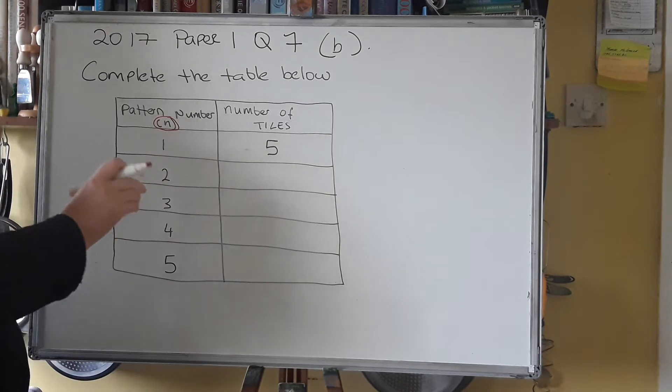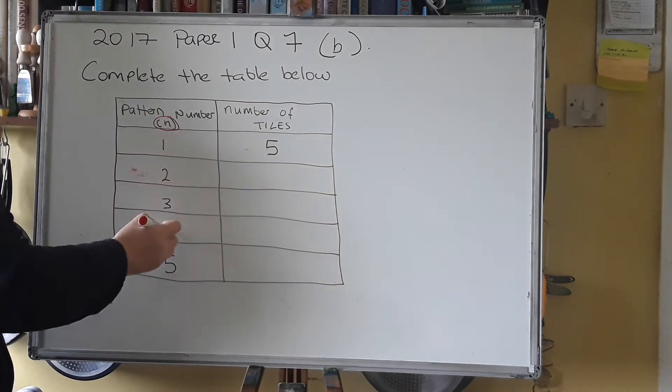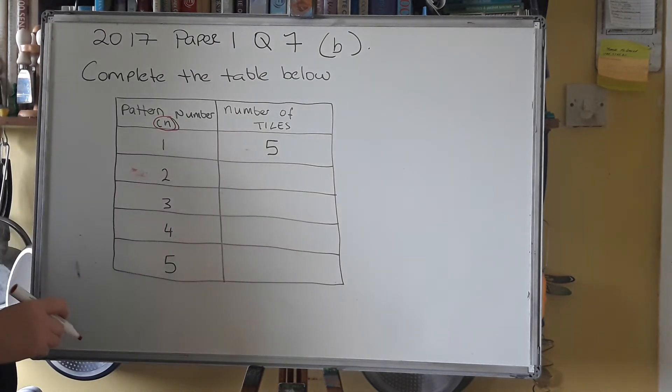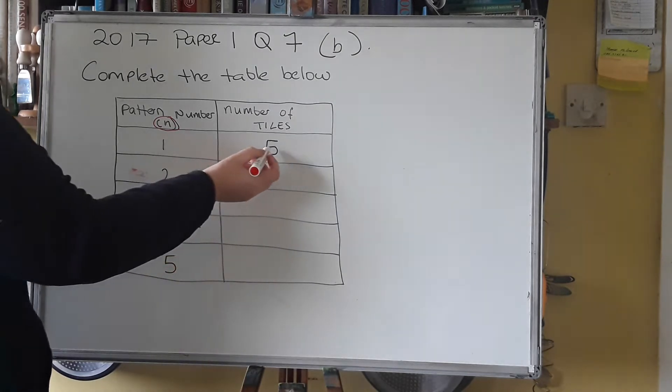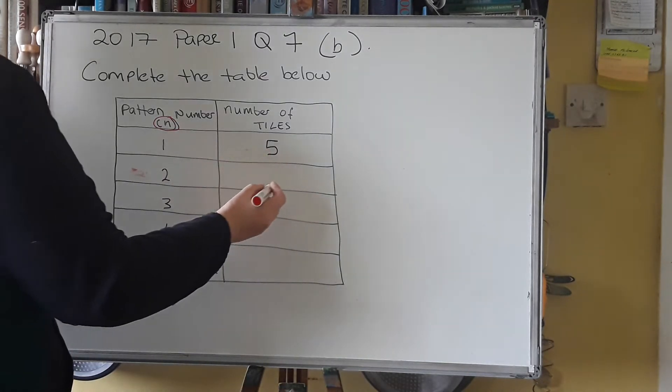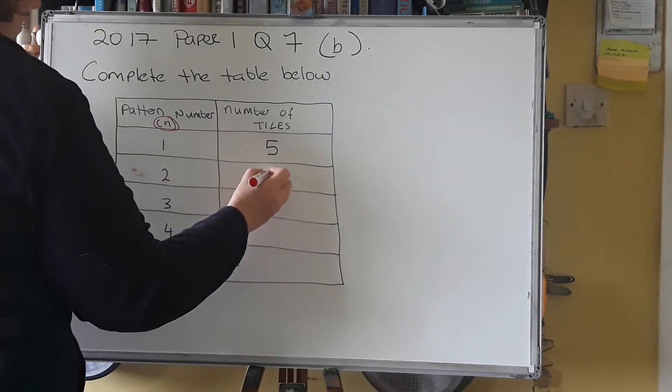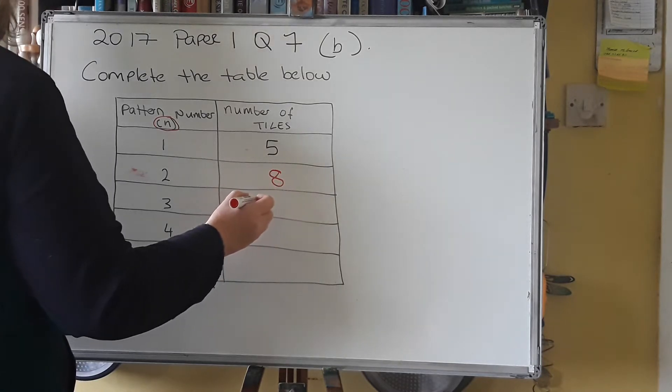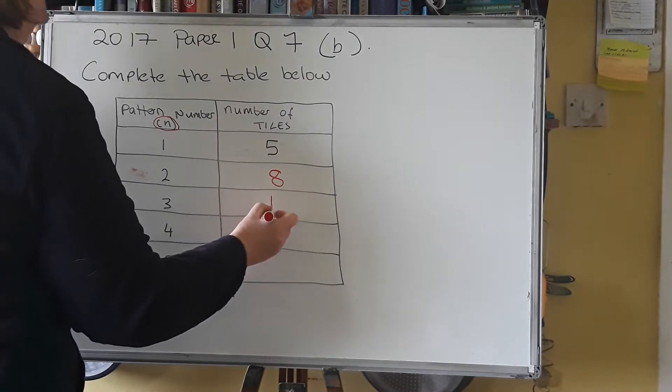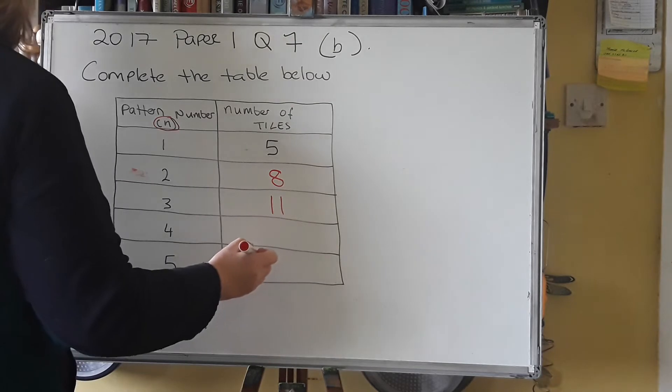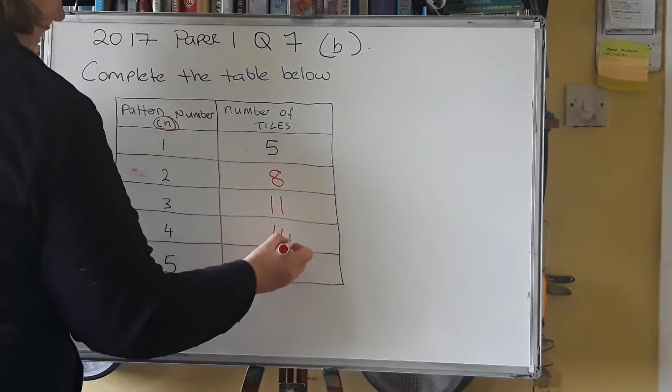In the second. Now for patterns 1, 2, 3 and 4, you have them there, so you can just count the tiles. So when you count the tiles in the first one, you get 5. When you count the tiles in the second one, you get 8. When you count the tiles in the third one, you get 11. When you count the tiles in the next one, you get 14.